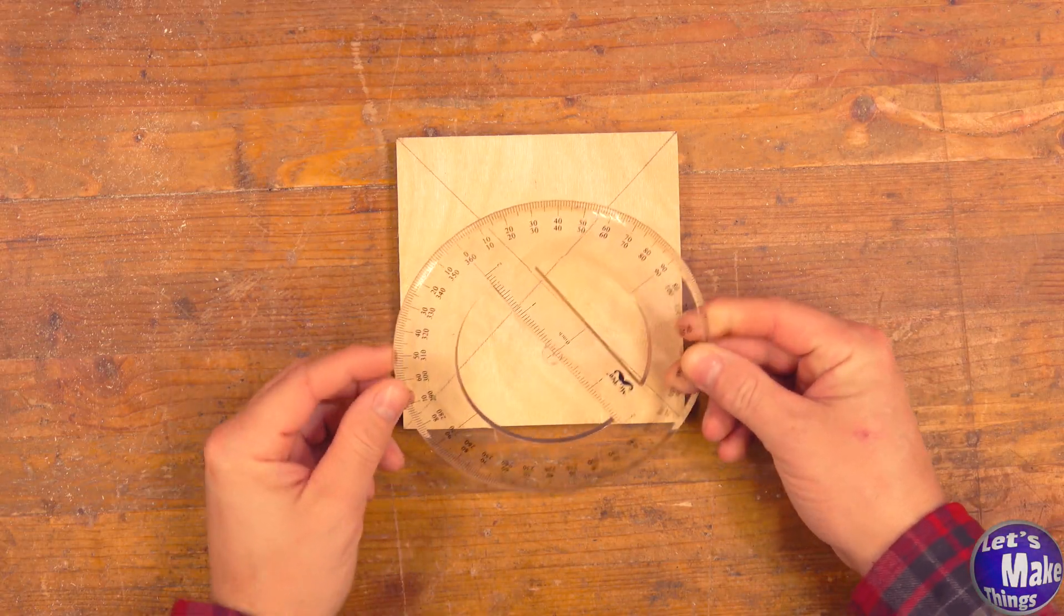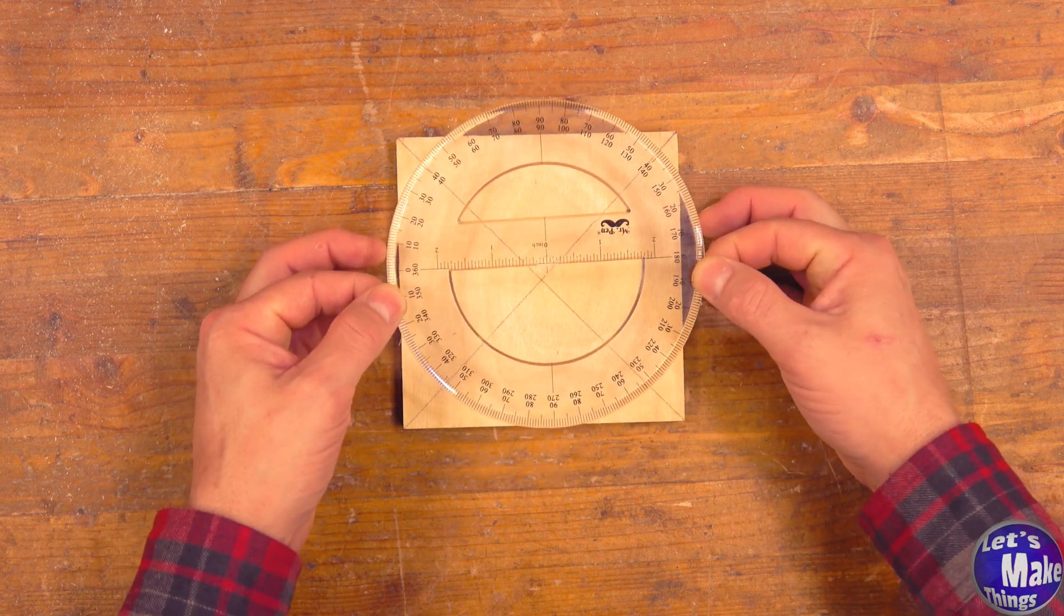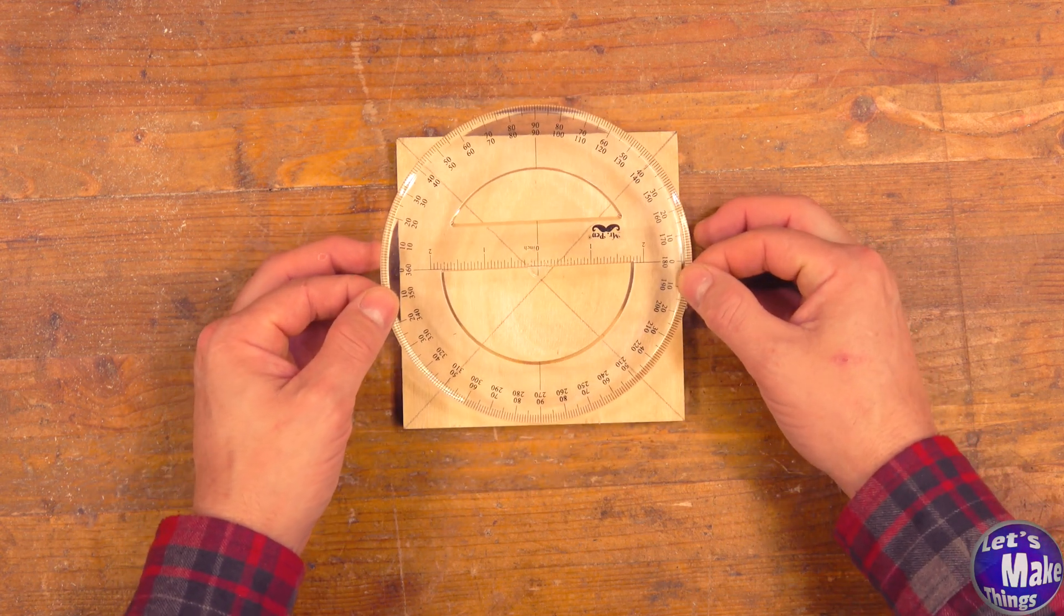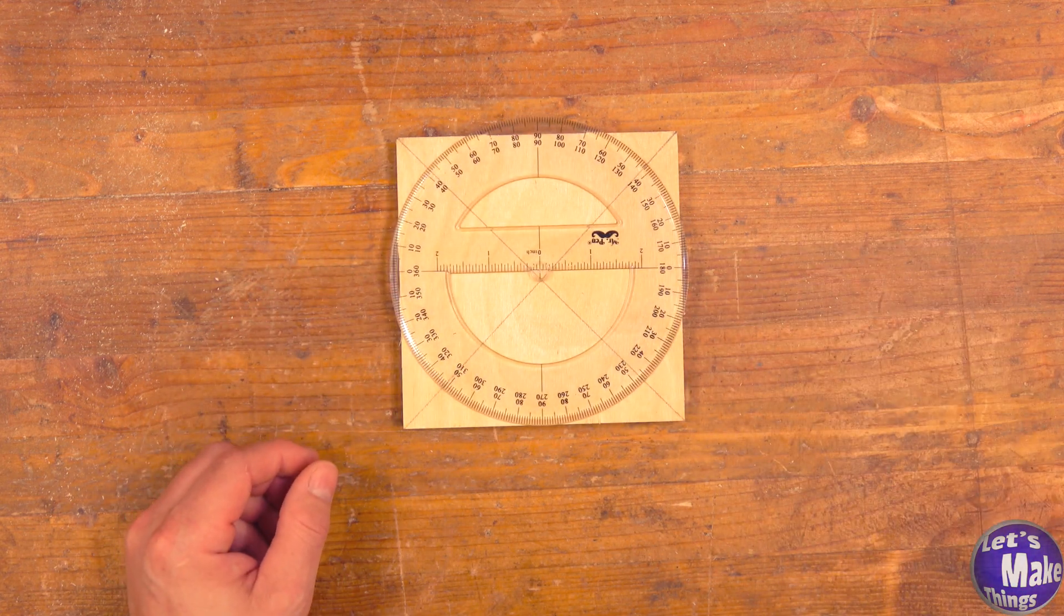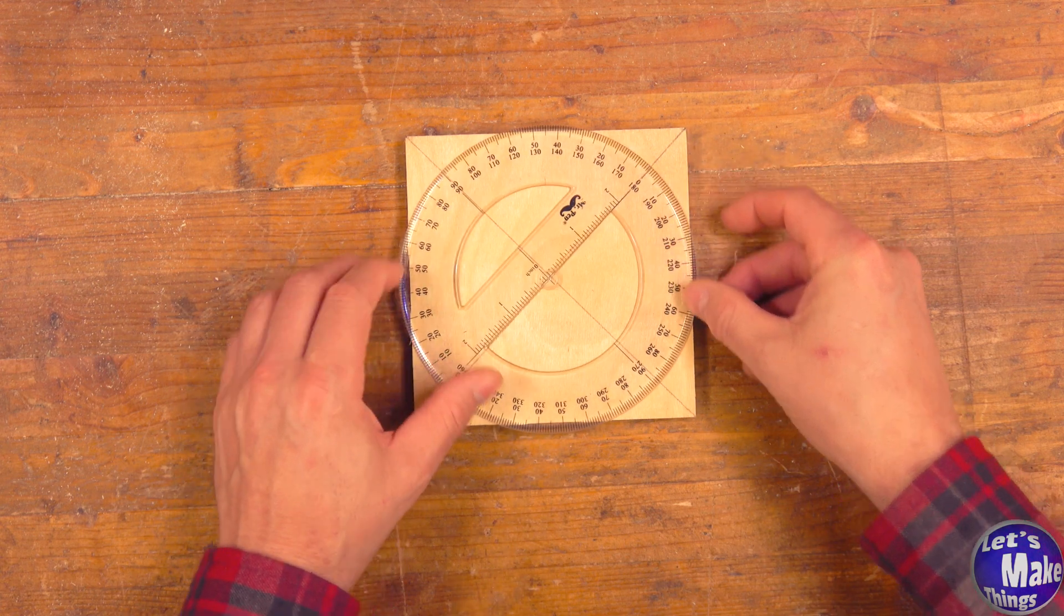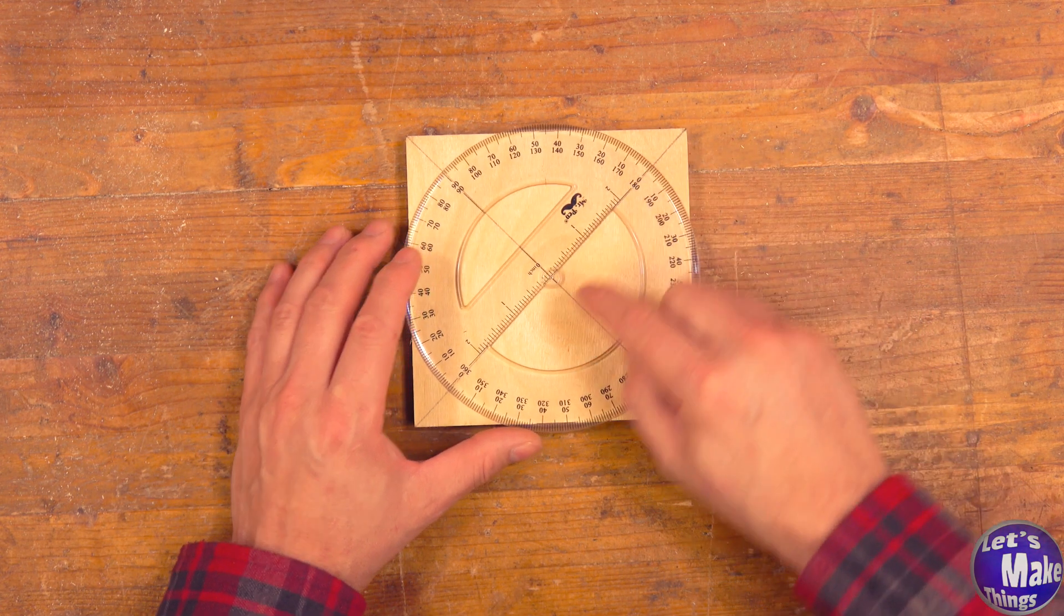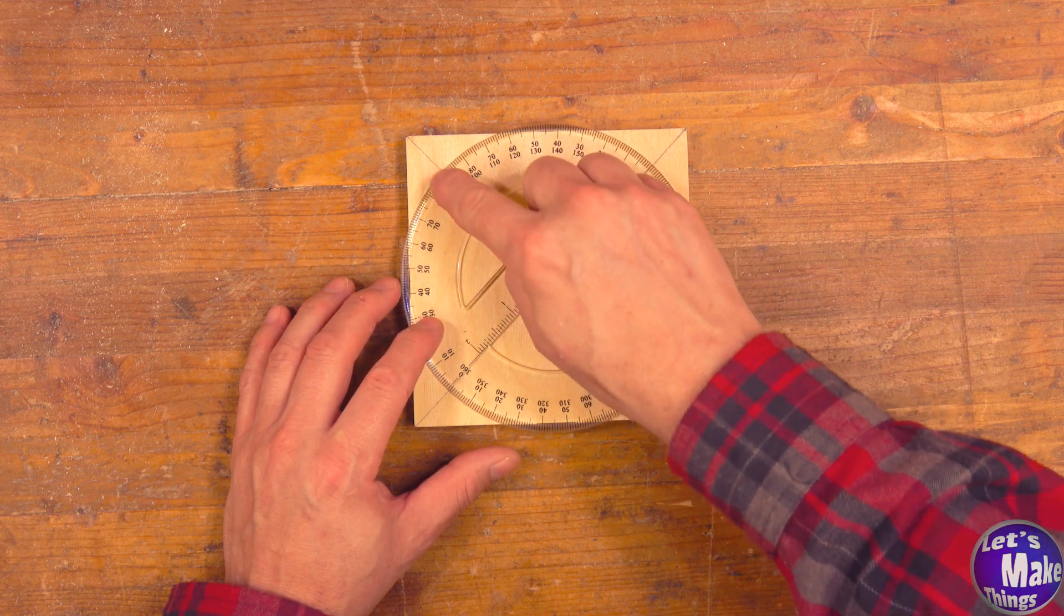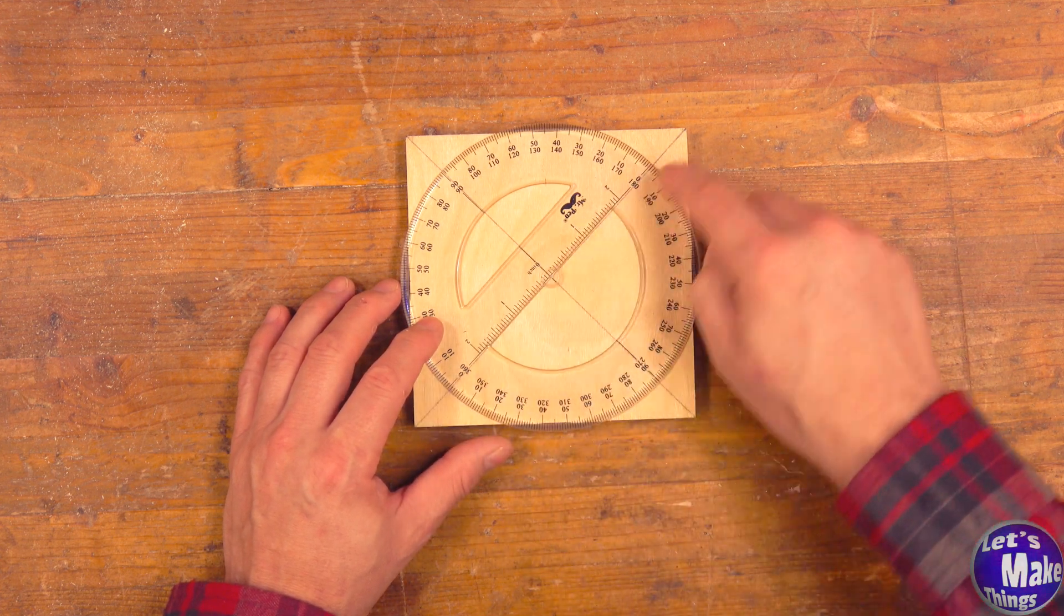We're going to talk about a protractor. A link to this protractor will be in the description as well as on the website, but it's basically 5 and 7/8 wide. We want to take our protractor and fit it on top of our X. We want the X to fit between 90 and 90 and zero and zero.